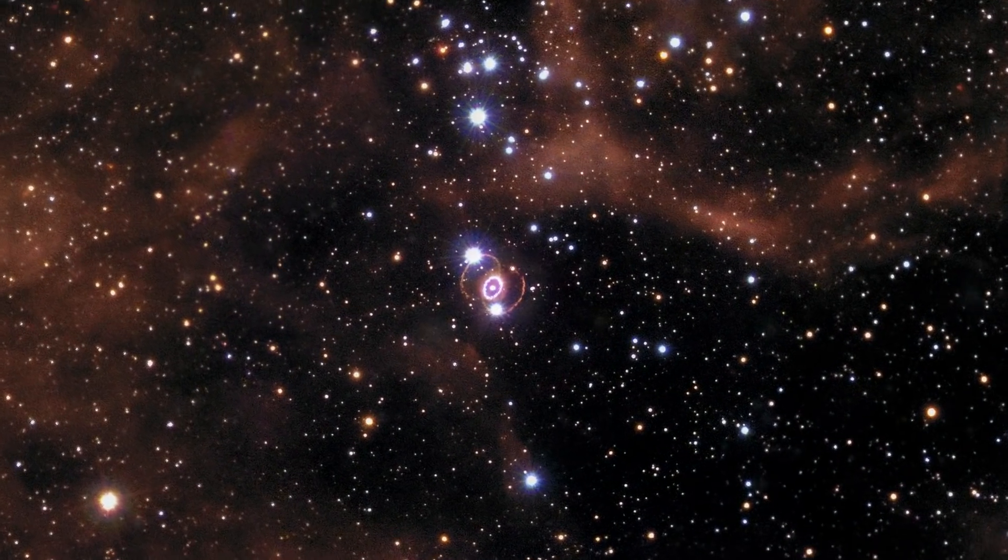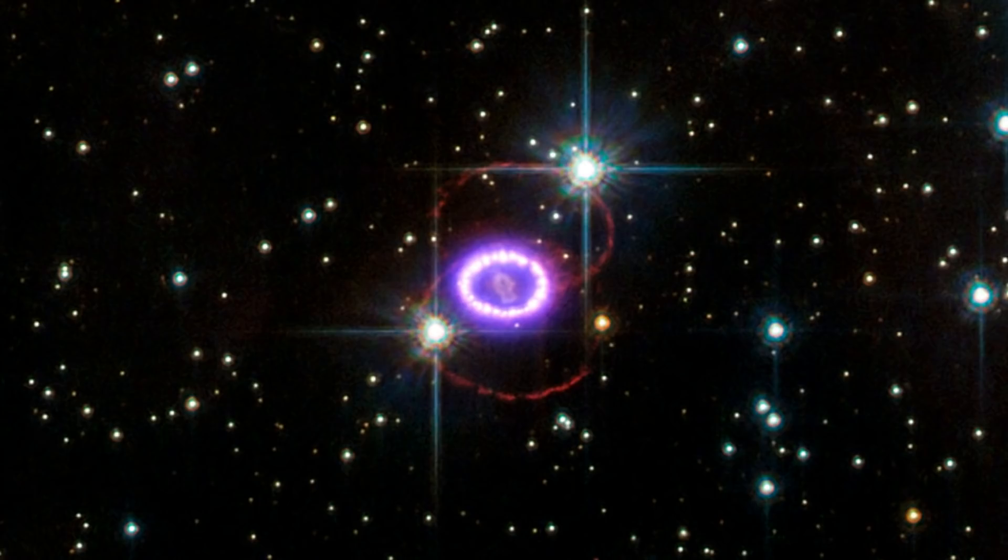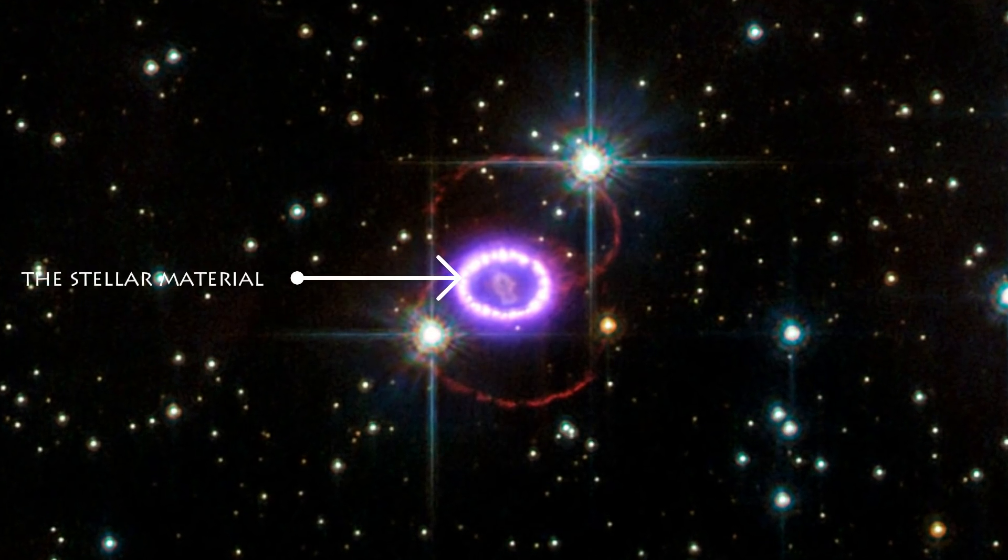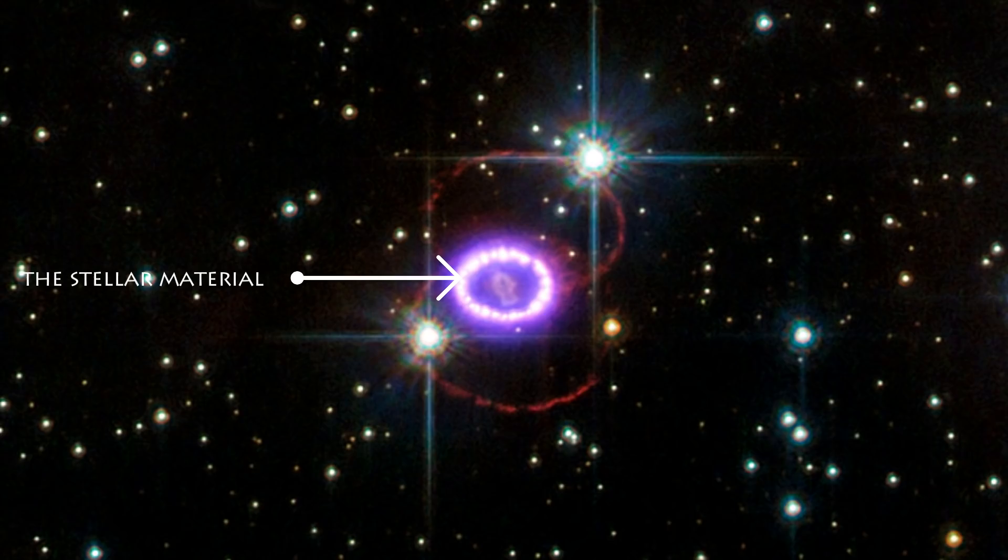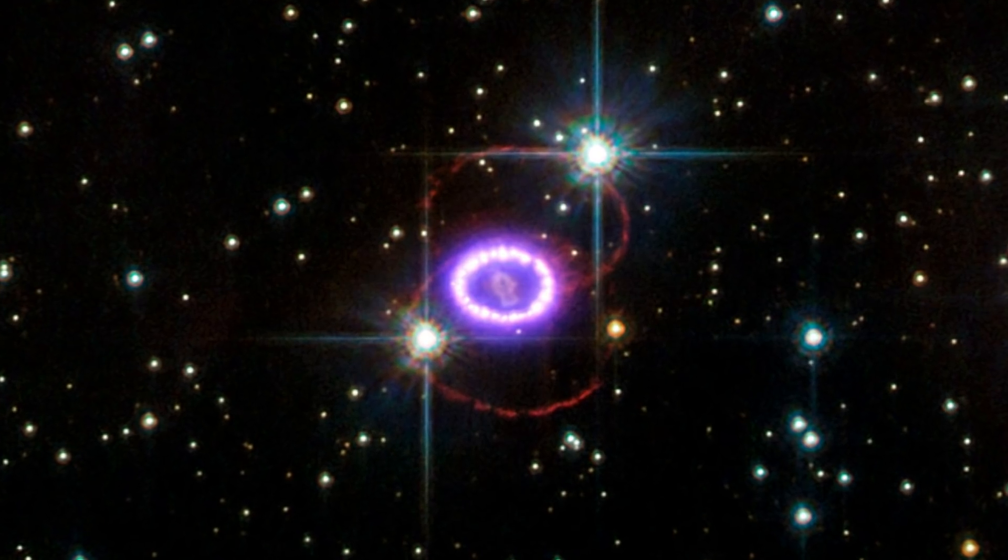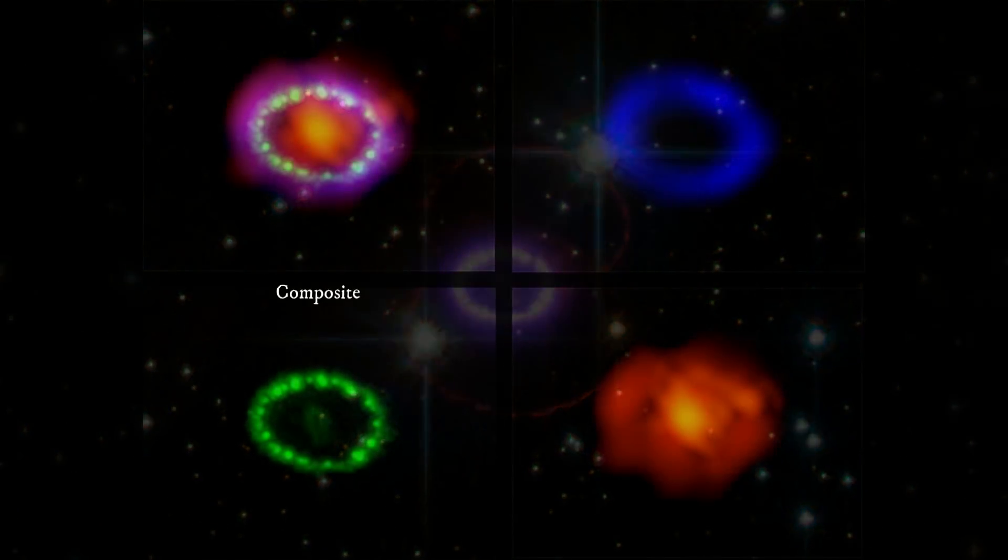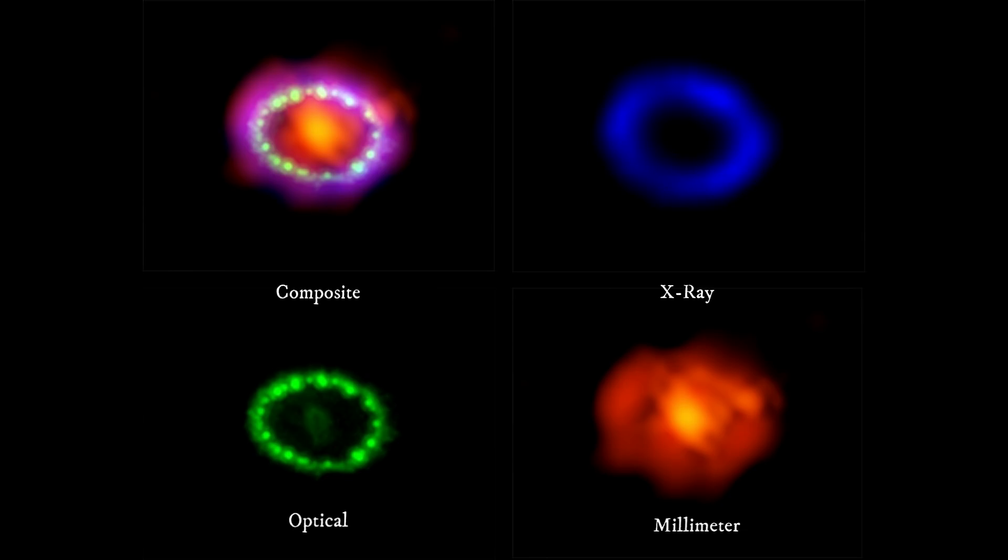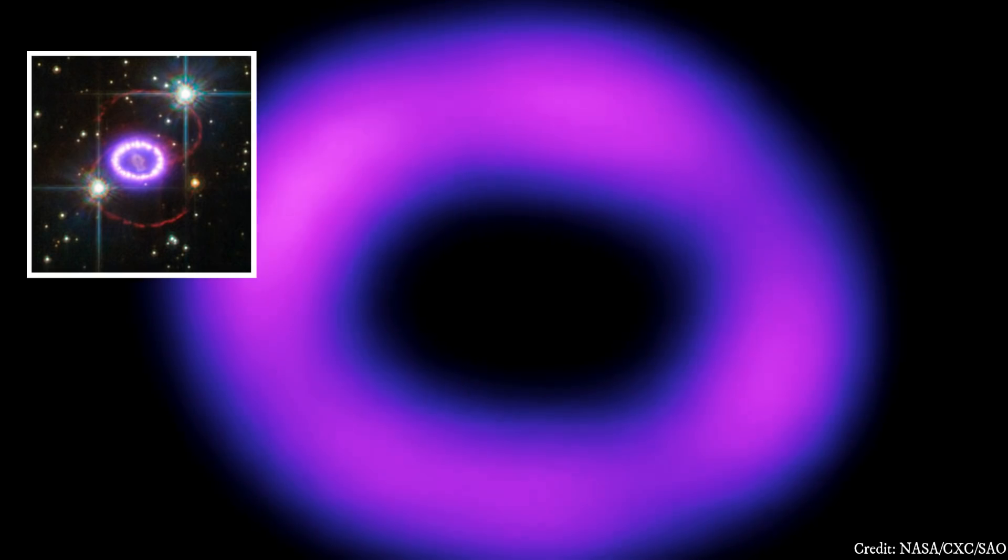This is how the star looks. The ring around it is the stellar material that the star ejected about 19,000 years before the explosion. As the shockwave from the supernova expanded, it impacted the ring. The shockwave lit up the ring through ionization.